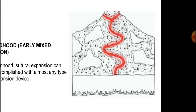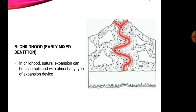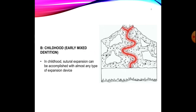In childhood or early mixed dentition, as we can see in the diagram, there is slight interdigitation of the mid-palatal suture. Therefore any expansion device in early childhood or early mixed dentition can be used for expansion. Devices delivering even light forces can be used here because the suture has not interdigitated to a point that heavy forces are required.